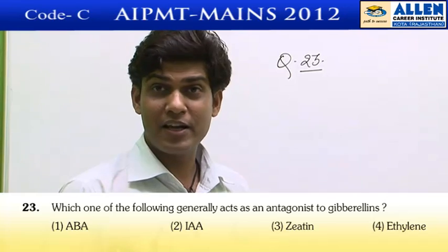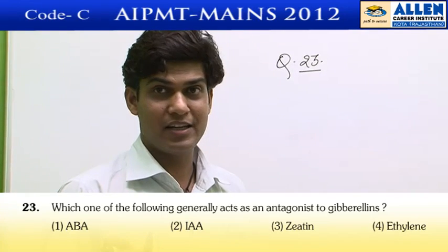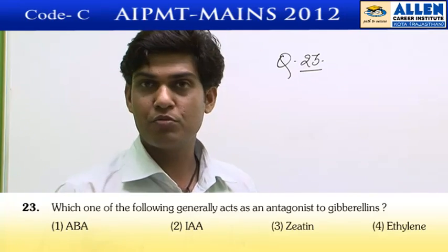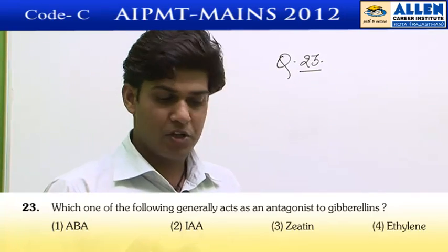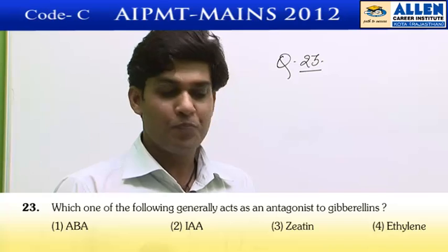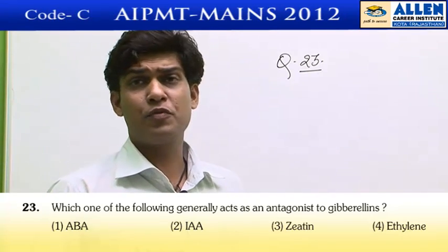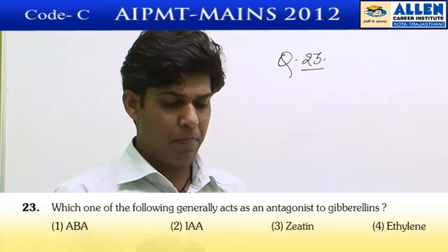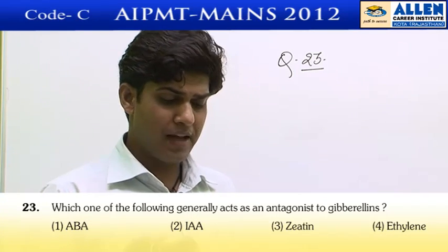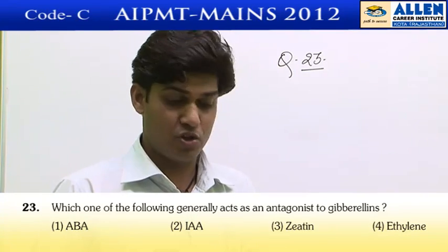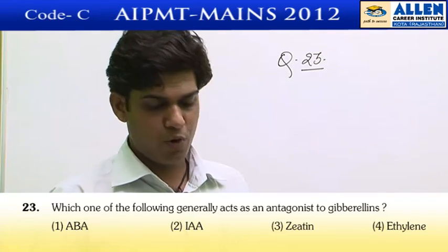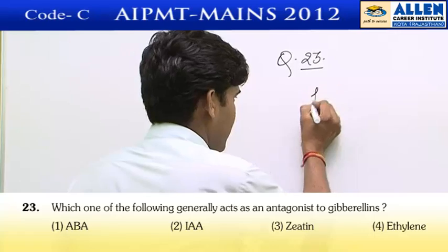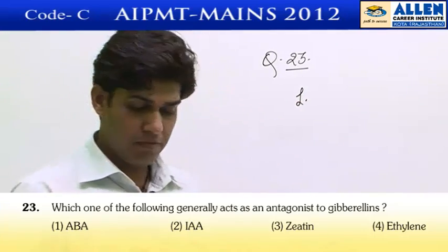Another option is indoleacetic acid — we know indoleacetic acid does not show any kind of antagonistic impact on the activities of gibberellin. The third option, cytokinin, is also a growth regulator that does not show any antagonistic impact on gibberellin activities. Ethylene also goes in the same category and does not offer any antagonistic impact. So option 1, abscisic acid, is the correct answer.